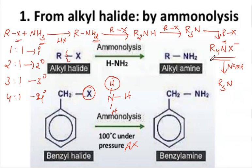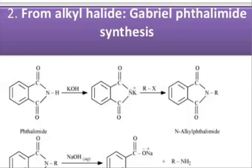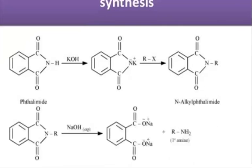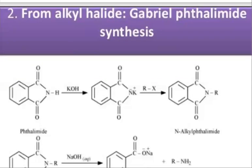In the previous chemical reaction, we found one drawback — it cannot give a single product in one step. So next, let's discuss the second method: if I want to prepare only primary amines, I can prepare them by using the Gabriel phthalimide reaction.